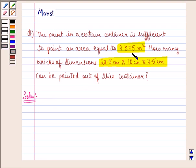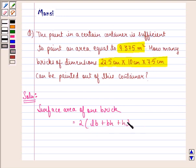9.375 divided by the surface area of one brick. So we see that surface area of one brick is given by twice of length into breadth plus breadth into height plus height into length.